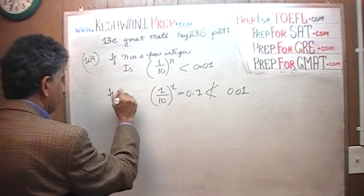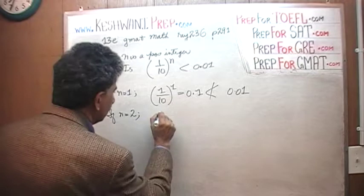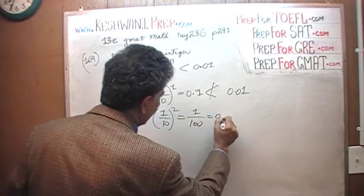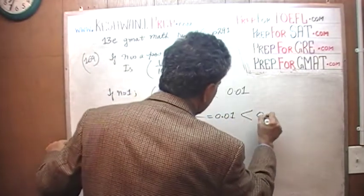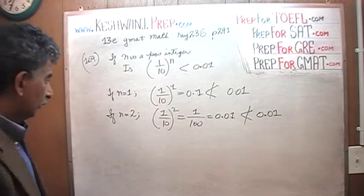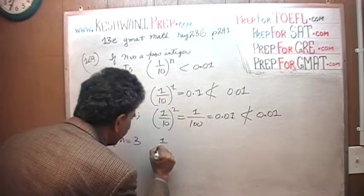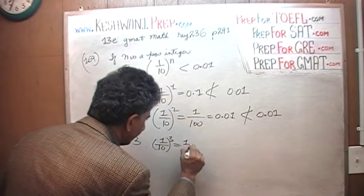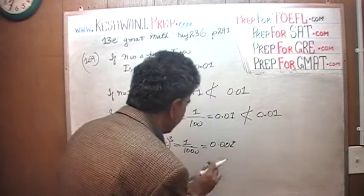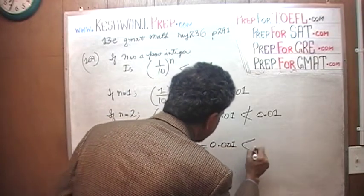That's the case if n happens to be 1. What happens if n happens to be 2? If n is 2, 1 over 10 raised to 2 is the same as 1 over 100, which is 0.01 — not less than 0.01 because 0.01 equals 0.01. What if n equals 3? Then 1 over 10 to the third is 1 over 1000, which is 0.001, which is less than 0.01.